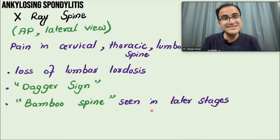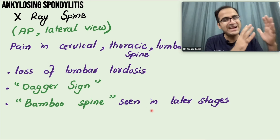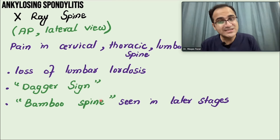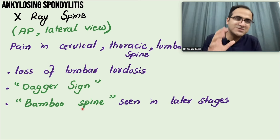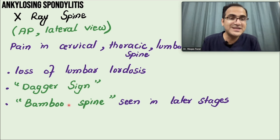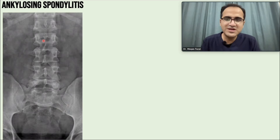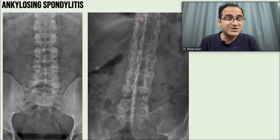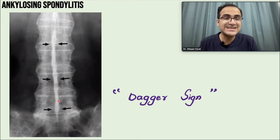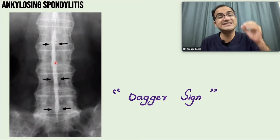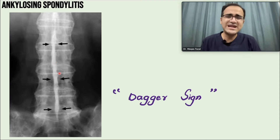Dagger sign and bamboo spine are seen in later, advanced stages when the disease has been left untreated. Bamboo spine shows complete fusion of vertebrae, and the dagger sign is a specific central white appearance on X-ray due to vertebral fusion. These findings are less common now with advanced treatments available, but may be seen in patients from remote areas who have not received treatment.